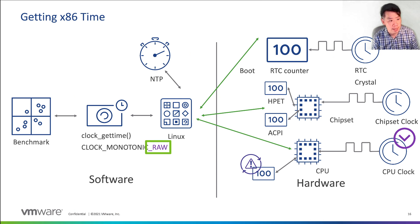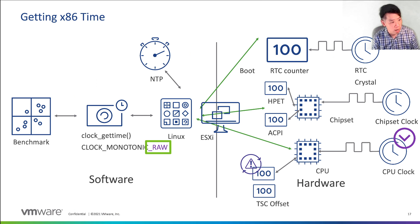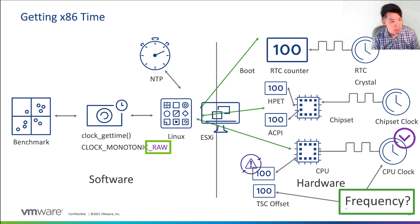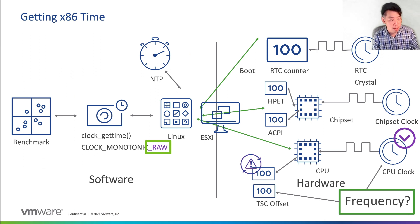These counters have varying latencies to access and tick at different rates. On some processors, accessing the HPET can be many times more expensive than accessing the TSC. In a virtualized environment, a hypervisor might intercept those calls, or a newer machine supporting the TSC offset feature may direct them to hardware. It's important to note that using the TSC requires knowing the TSC clock frequency, which isn't always a CPU clock. This frequency is sometimes difficult to know if virtualization is involved, and if you get it wrong, you get the wrong time.